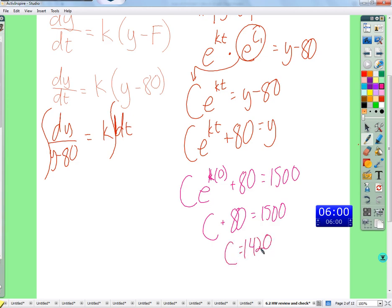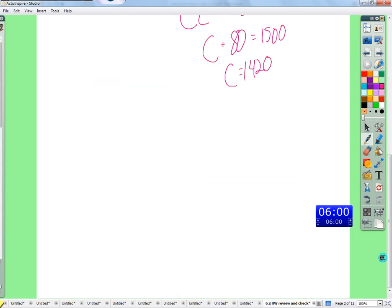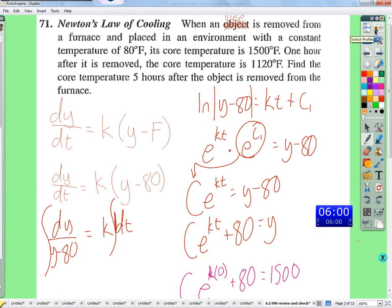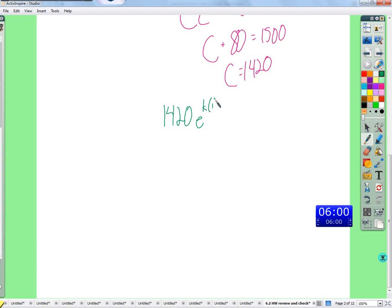Now we know c, but we still don't know k. But what can we do about that? Now we can use the one hour data. So 1120 equals 1420 e to the k times 1 plus 80. So we solve for k, which is in the exponent of e, which means we're going to use a natural log here soon.